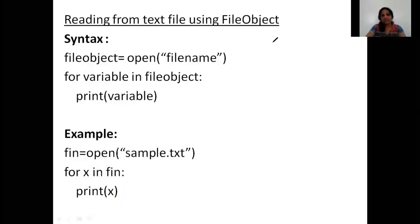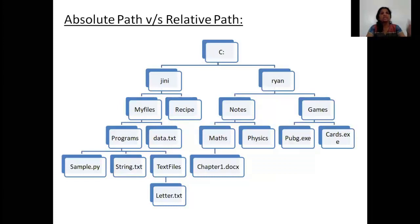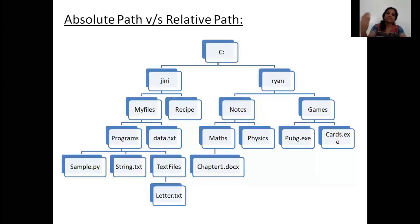When we specify file names — like in the previous example we just saw `sample.txt` — where is sample.txt going to be created if you're opening it in write mode? In the current working directory. Or if you're opening it in read mode, from where will sample.txt be read? From the current working directory. So if you are in the current working directory, all files that you name while opening the file, just without giving any path, are going to be created in or read from the current working directory.